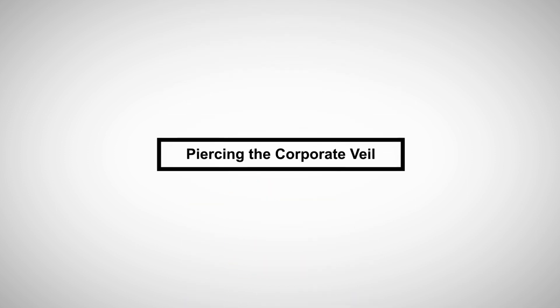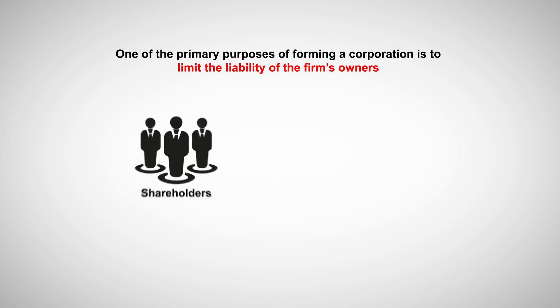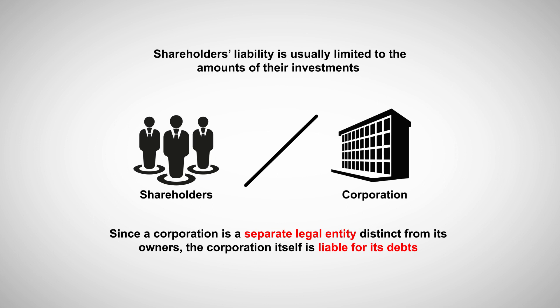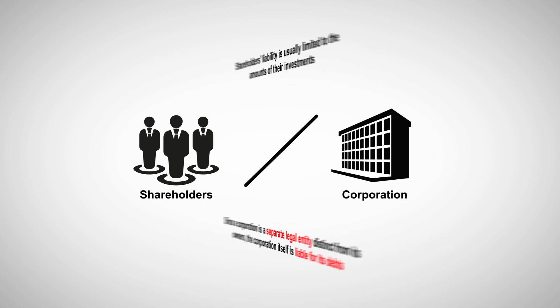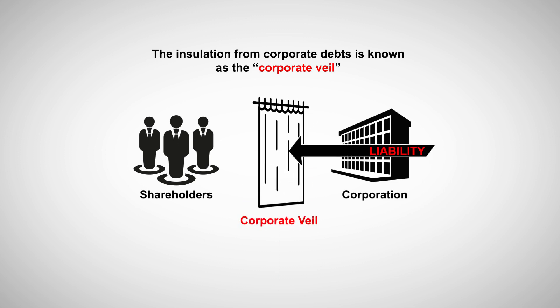Piercing the Corporate Veil. One of the primary purposes of forming a corporation is to limit the liability of the firm's owners, also known as the shareholders. Since a corporation is a separate legal entity distinct from its owners, the corporation itself is liable for its debts. Shareholders' liability is usually limited to the amounts of their investments. The insulation from corporate debts is known as the corporate veil.